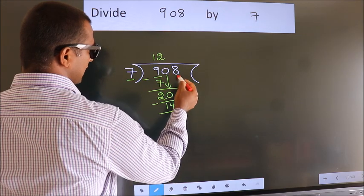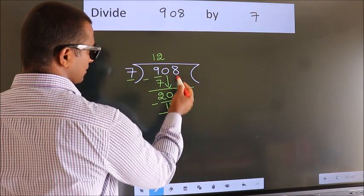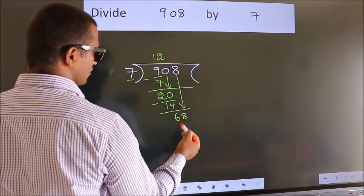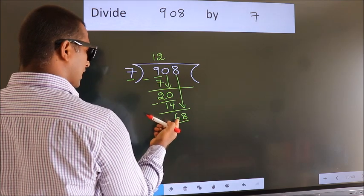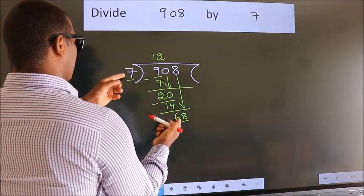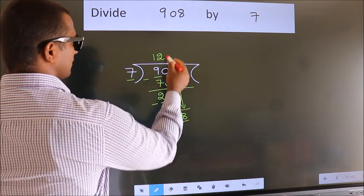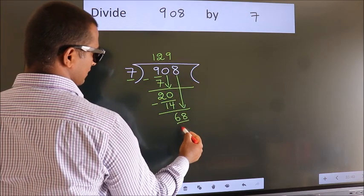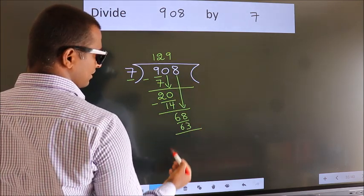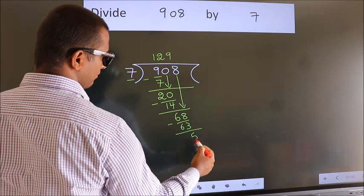After this, bring down the beside number. So, 8 down. So, 68. A number close to 68 in 7 table is 7, 9s, 63. Now, we subtract. We get 5.